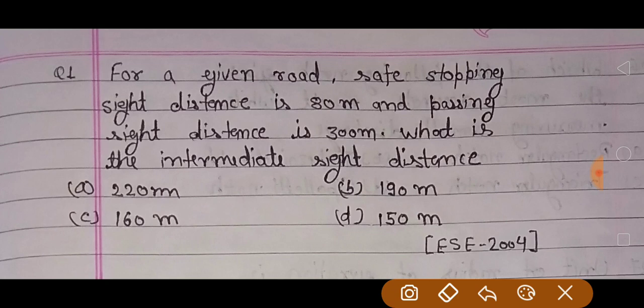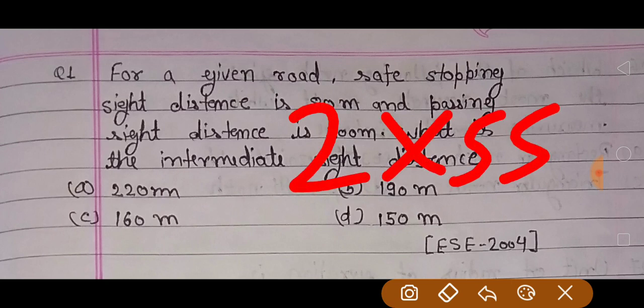We know that intermediate side distance is 2 times stopping side distance. Our stopping side distance is given 80 meter, so the intermediate side distance is 160 meter. Our correct answer is 160 meter.